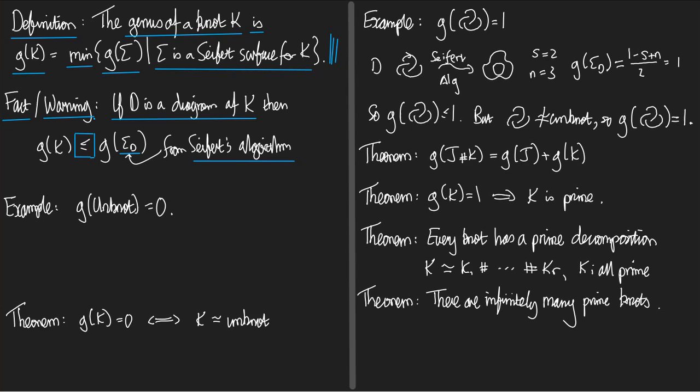This is a fact and a warning. What's the warning? Nothing else is true. It might happen that you made a terrible choice of diagram d, and that consequently the genus of sigma_d is ten times the size of the genus of k. And then this inequality is strict and you don't learn what the genus is. It can even happen that the genus of the knot k is strictly smaller than the genus of all the surfaces you get from the algorithm.